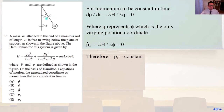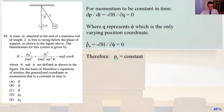One thing to remember: for momentum to be constant in time, dp/dt equals negative partial of H divided by partial of q, and that must equal zero, where q represents phi, which is the only varying position coordinate. So p-dot of phi must equal the negative partial of H divided by the partial of phi, which must equal zero. Therefore p of phi must be constant, because the derivative of a constant is zero. Answer E.